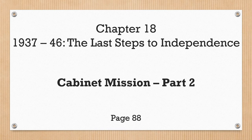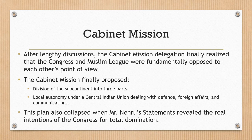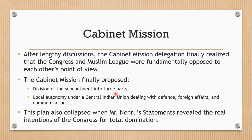Now we will see what results and conclusions came from the two major political parties. After lengthy discussions, the Cabinet Mission delegation finally realized that the Congress and the Muslim League were fundamentally opposed to each other's point of view. They realized that the views of Congress and Muslims were basically opposite. So they again proposed something through the Cabinet Mission — that the whole subcontinent would be divided into three parts, the division remaining the same.